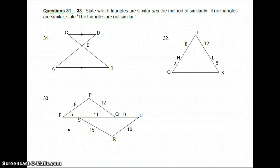Questions 31 through 33 say state which triangles are similar and the method of similarity. If no triangles are similar, state the triangles are not similar.